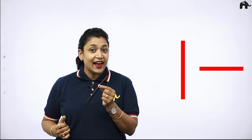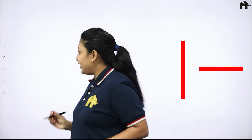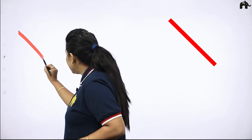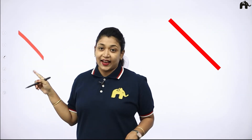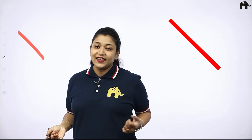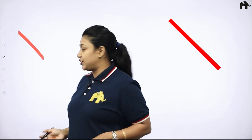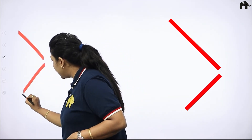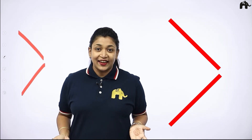What will we make? Slanting line! So let's draw. From the top, draw a slanting line. What is this? Slanting line! Let's try. You can also draw like this, children. This is also slanting line.